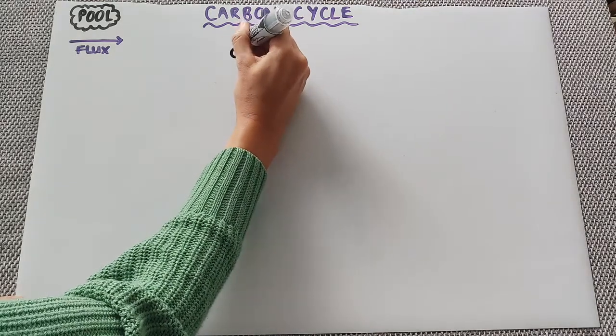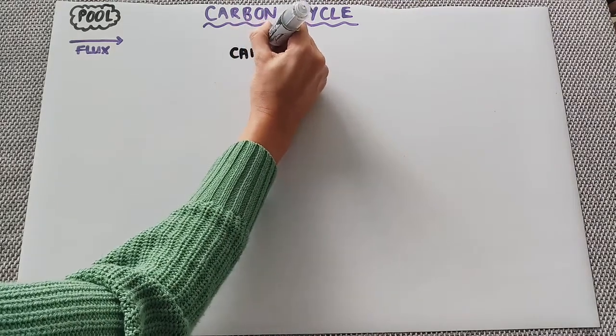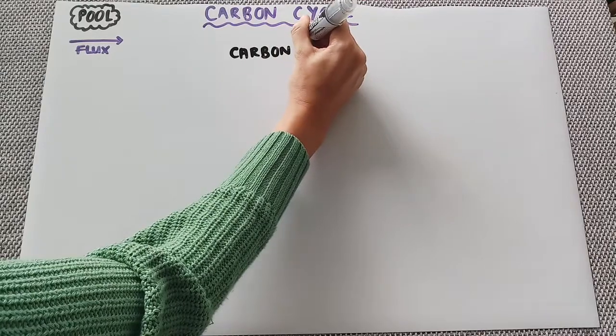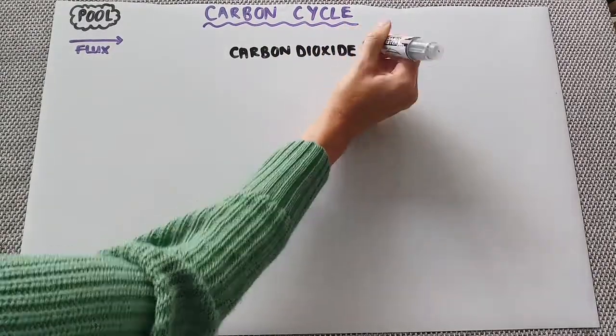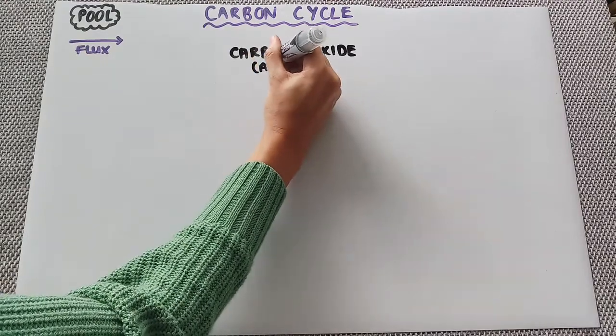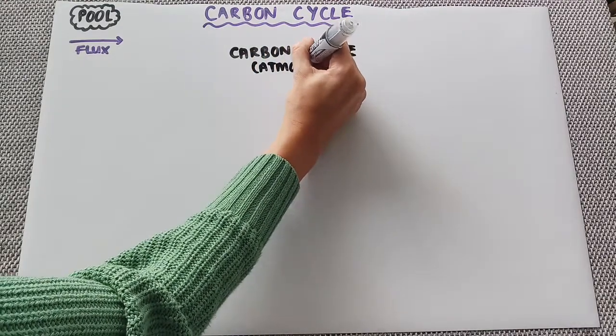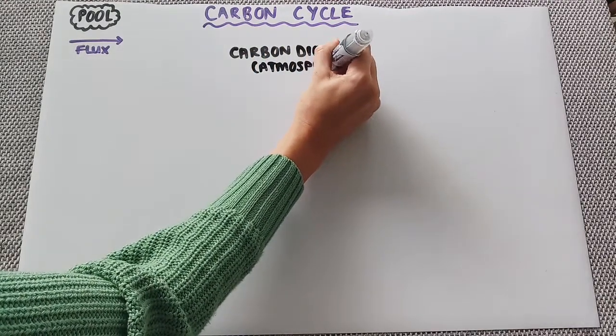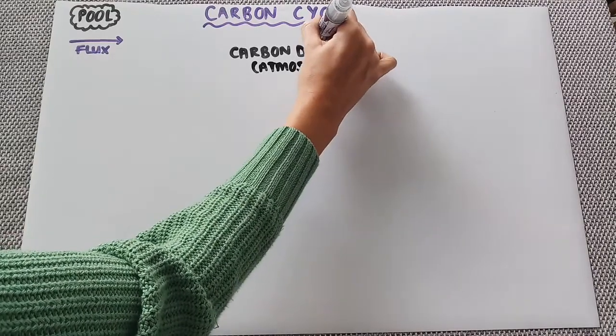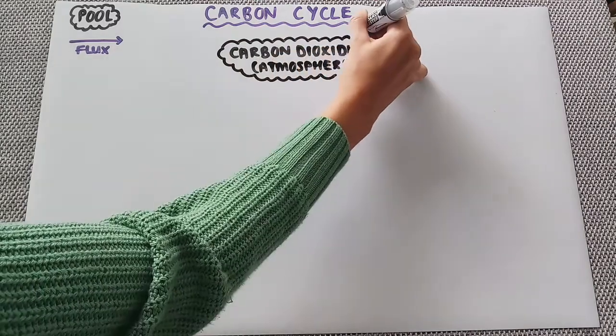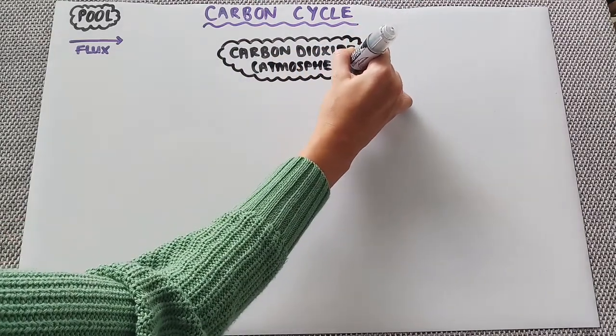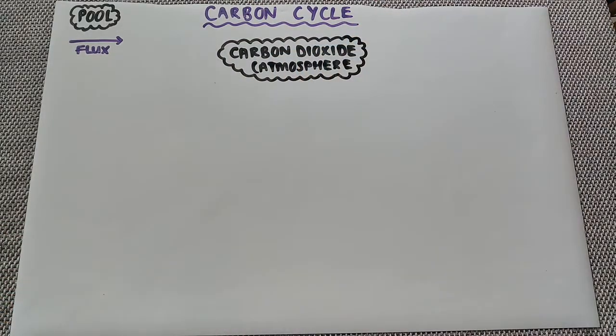So we're going to start off with carbon dioxide and this is in the atmosphere. Now remember when you are drawing your carbon cycle it's really important that you write carbon dioxide out in full. You do not write CO2 otherwise you will not get a mark for that in your cycle.